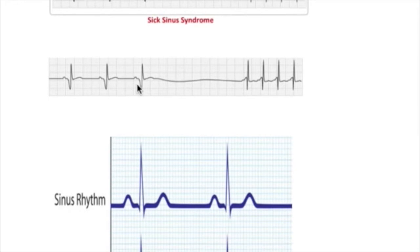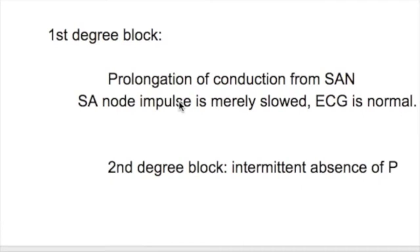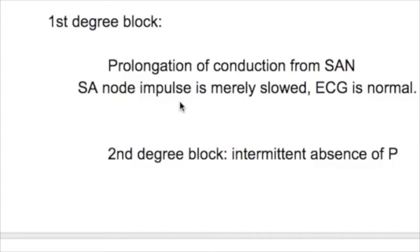In SA node exit blocks, the first degree exit block involves prolongation of conduction from the SA node. The SA node impulse is merely slowed, but the ECG is normal in that case. There is a problem in the SA node impulse getting out of the perinodal tissue into the surrounding atrial tissues. This cannot be recorded because the external leads do not record SA node electrical activity, so the ECG is normal.